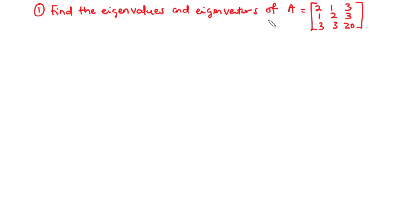We have A to be a 3x3 matrix with entries: row 1 is 2, 1, 3; row 2 is 1, 2, 3; and row 3 is 3, 3, 20.